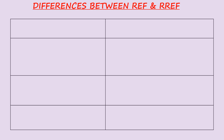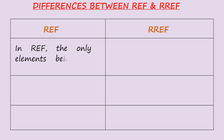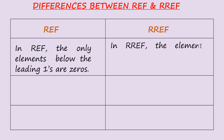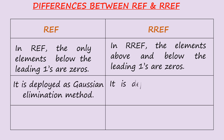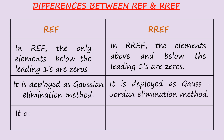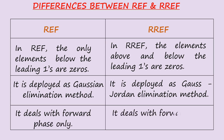Differences between REF and RREF: in REF, only the elements below the leading ones are 0; in RREF, the elements both above and below the leading ones are 0. REF is produced by Gaussian elimination, which deals with the forward phase only. RREF is produced by Gauss-Jordan elimination, which deals with both the forward phase and the backward phase.